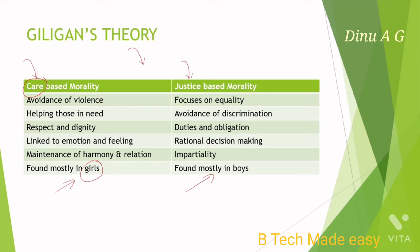In the case of girls, Gilligan proposed the following characteristics: avoidance of violence, helping those in need, respect and dignity. Girls give more reference to respect and dignity, are linked to emotion and feeling, and work toward maintenance of harmony and relations. These characteristics are basically found in girls.